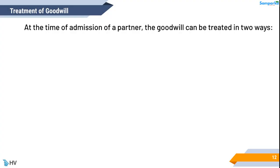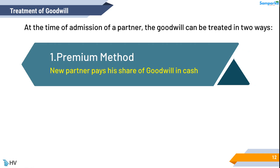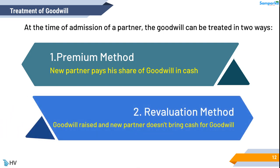The goodwill of a partner can be treated in two ways. 1. Premium method — the new partner pays his share of goodwill in cash. 2. Revaluation method — goodwill is raised and the new partner doesn't bring cash for goodwill.